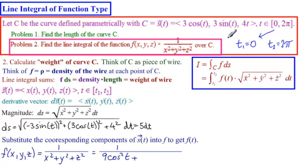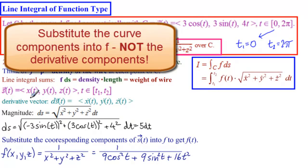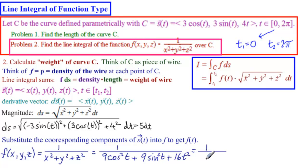The curve itself, 9 sine squared of t, and then plus 16 t squared. Let me repeat that again. You put the curve components in, not the derivative components. So this is now 1 over 9 plus 16 t squared. That's a function of t.